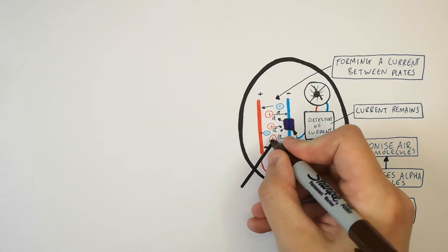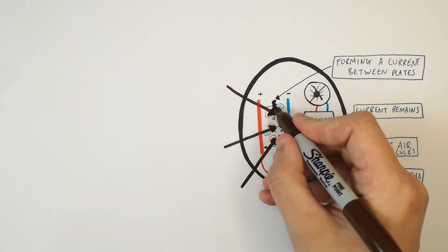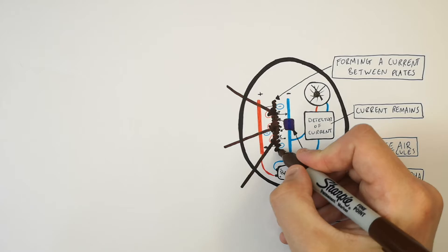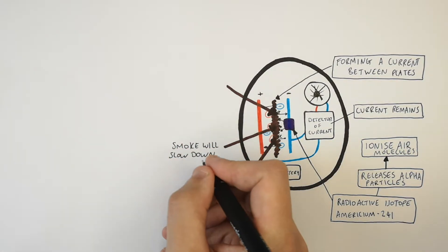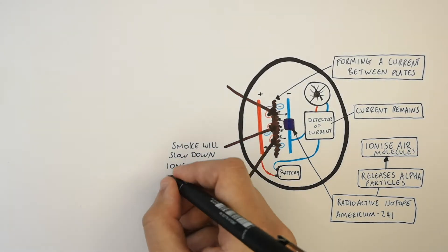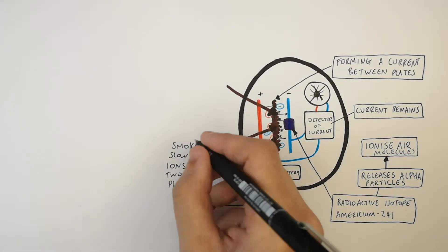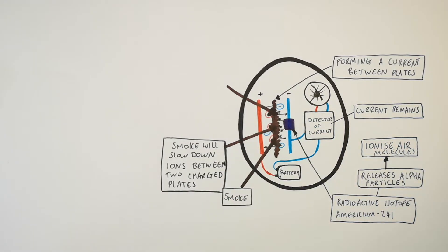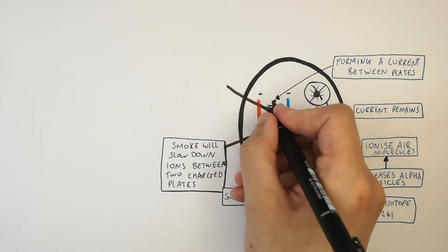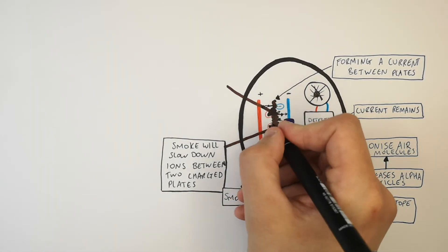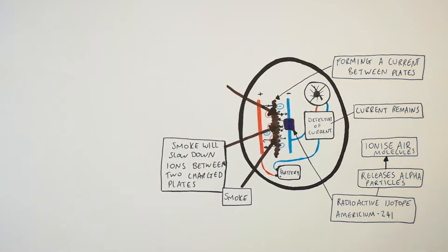If smoke enters the smoke alarm and goes between the two plates, smoke is going to slow down the ions between the two charged plates. If there's a slowdown in the ions between the two charged plates, the current is going to decrease.